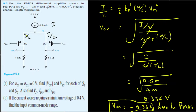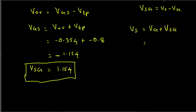Since Vsg equals Vs minus Vg, and Vg is zero, we get Vs = Vg plus Vsg = 0 plus 1.154 = 1.154 volts.